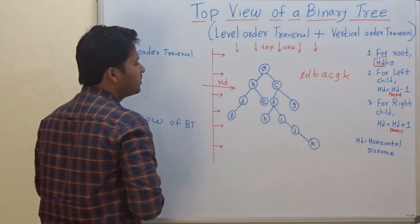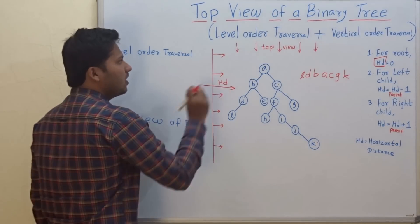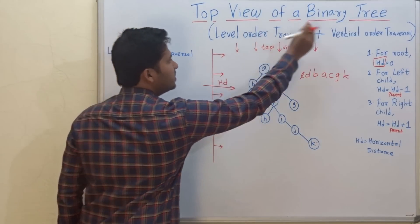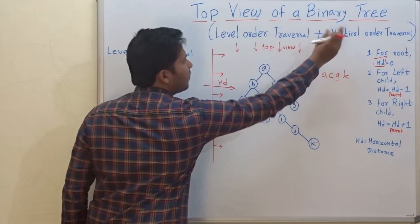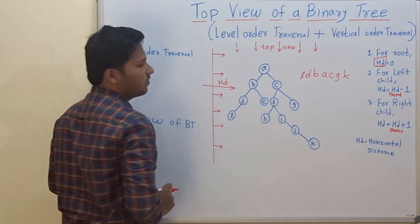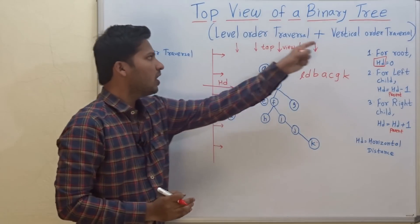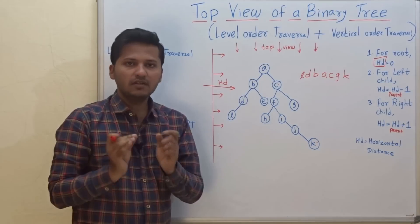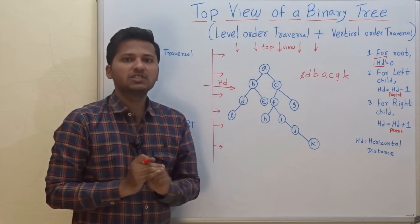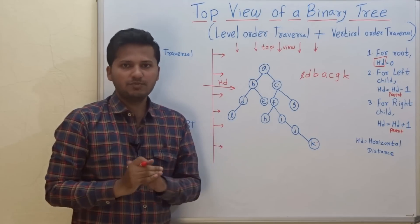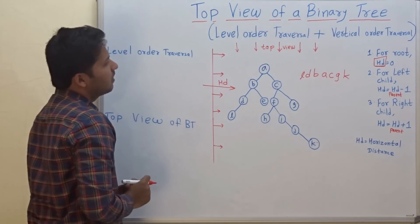Let's see the algorithm to print this top view. Our algorithm is a combination of two algorithms: level order traversal plus vertical order traversal. I have explained these two algorithms in detail in my previous videos — the link is in the description below. Let's go ahead with the algorithm.